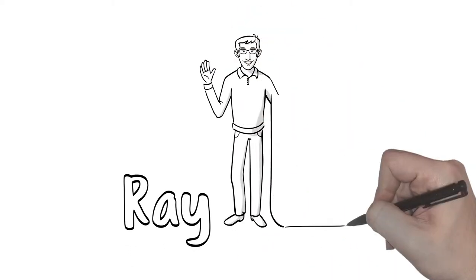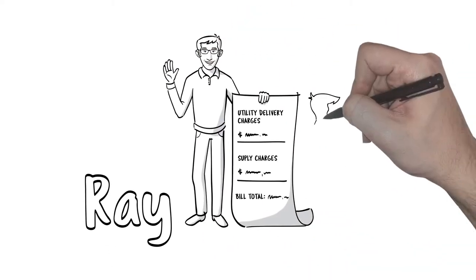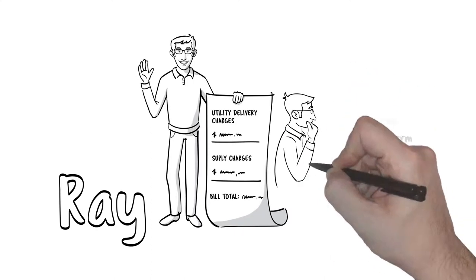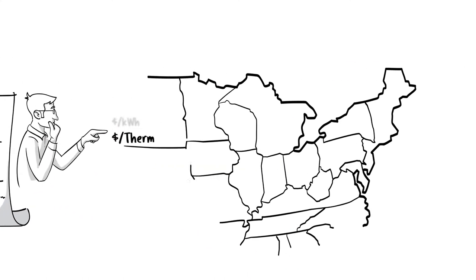This is Ray and this is Ray's utility bill. Ray doesn't know it but he can choose his electricity and natural gas supplier and it doesn't need to be his local utility.